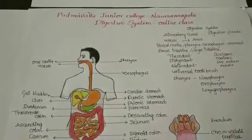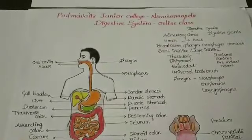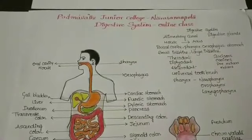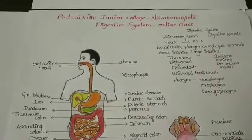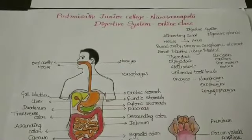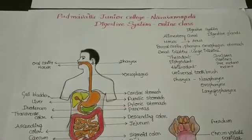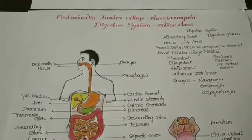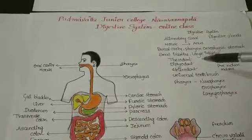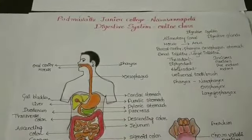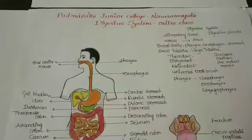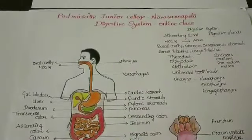Teeth are ecto-mesodermal in origin. The teeth of human beings are embedded in the sockets of the jaw bone, and hence this is called thecodont dentition.